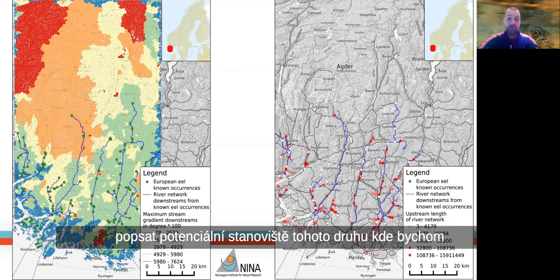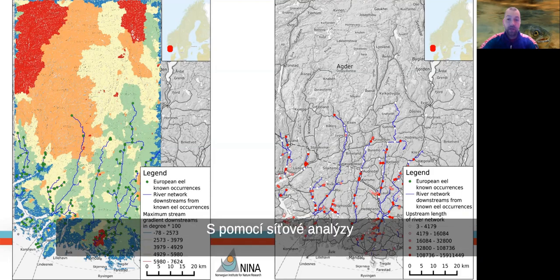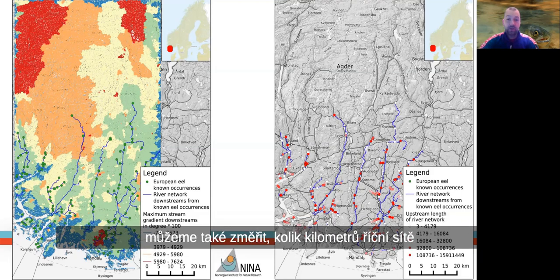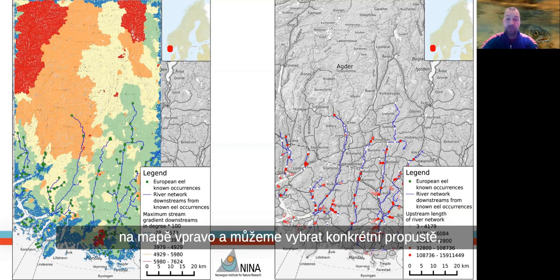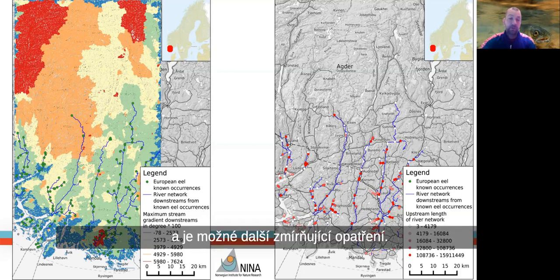That can help us describe the potential habitat of that species, where we would want to focus mitigation or restoration efforts. With the help of network analysis, we can also measure how many kilometers of river network upstream are affected by a given culvert, as illustrated in the map on the right. And we can select those culverts that are located downstream of known occurrences of vulnerable species, further limiting the possible mitigation measures.